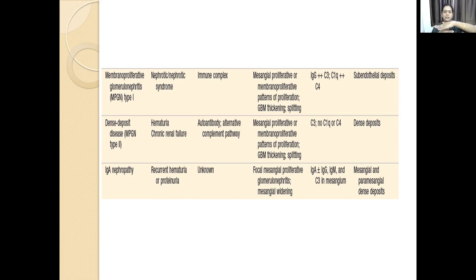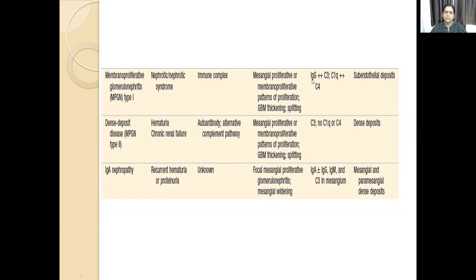So it appears as a tram track. What is getting deposited here? IgG, C3, C1Q, and C4. There are subendothelial deposits. In dense deposit disease, there are usually hematuria and chronic renal failure. It is usually an alternate complement pathway.